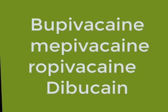Bupivacaine, mepivacaine, and ropivacaine have similar clinical uses but differ in their duration of action. Bupivacaine has been the most widely used local anesthetic for obstetric anesthesia, but it causes cardiac depression more frequently than many other local anesthetics. Dibucaine is formulated in an ointment used to relieve the pain and itching of hemorrhoids, piles, and other problems in the rectal area.